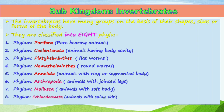The eight phyla are: first, Porifera — animals which bear pores; second, Coelenterata — animals having a body cavity; third, Platyhelminthes — flat worms; fourth, Nematoda — round worms; fifth, Annelida — animals with ring or segmented body; sixth, Arthropoda — animals with jointed legs; seventh, Mollusca — animals with soft body; eighth, Echinodermata — animals with spiny skin.